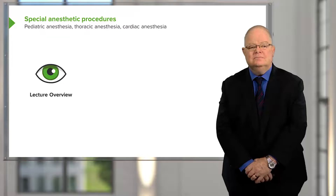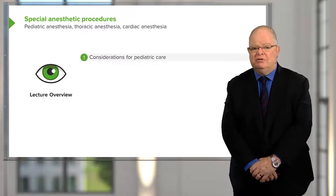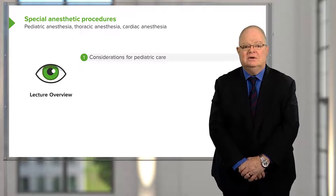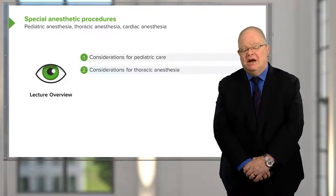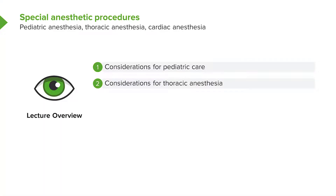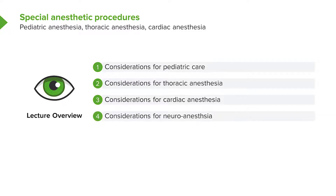Hello ladies and gentlemen. In this lecture we're going to discuss some special areas of anesthesia in which the anesthesiologist must adapt to complex surgery, complex medical conditions, or unusual situations. We're going to talk about pediatric care, thoracic anesthesia, cardiac anesthesia and open heart surgery, and neuroanesthesia — including the different types of anesthetic necessary for these sometimes extraordinarily long operations.